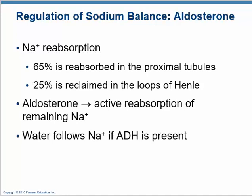Aldosterone is made by the adrenal gland and it activates the sodium-potassium pumps in the distal convoluted tubules and collecting ducts of the nephron. Without aldosterone, most sodium is reabsorbed in the proximal convoluted tubules, 25% more in the loop of Henle, and the remaining ~10% in the distal convoluted tubule and collecting ducts is not reabsorbed because those pumps don't turn on.